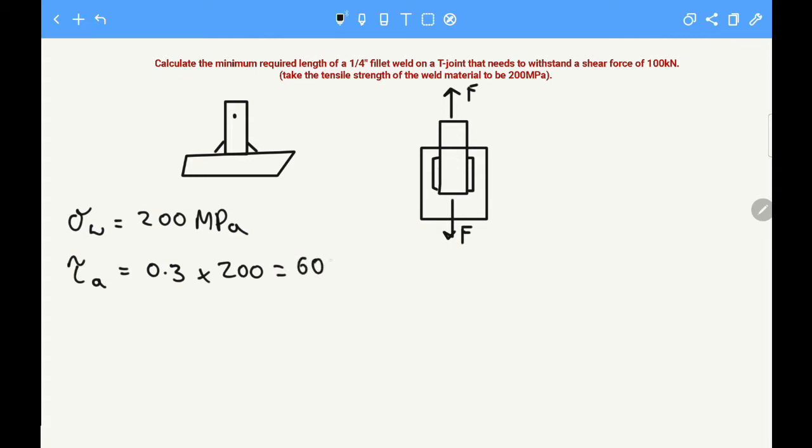So 0.3 times 200 megapascals equals 60 megapascals. Let's put that into standard units: 60 times 10 to the 6 pascals.